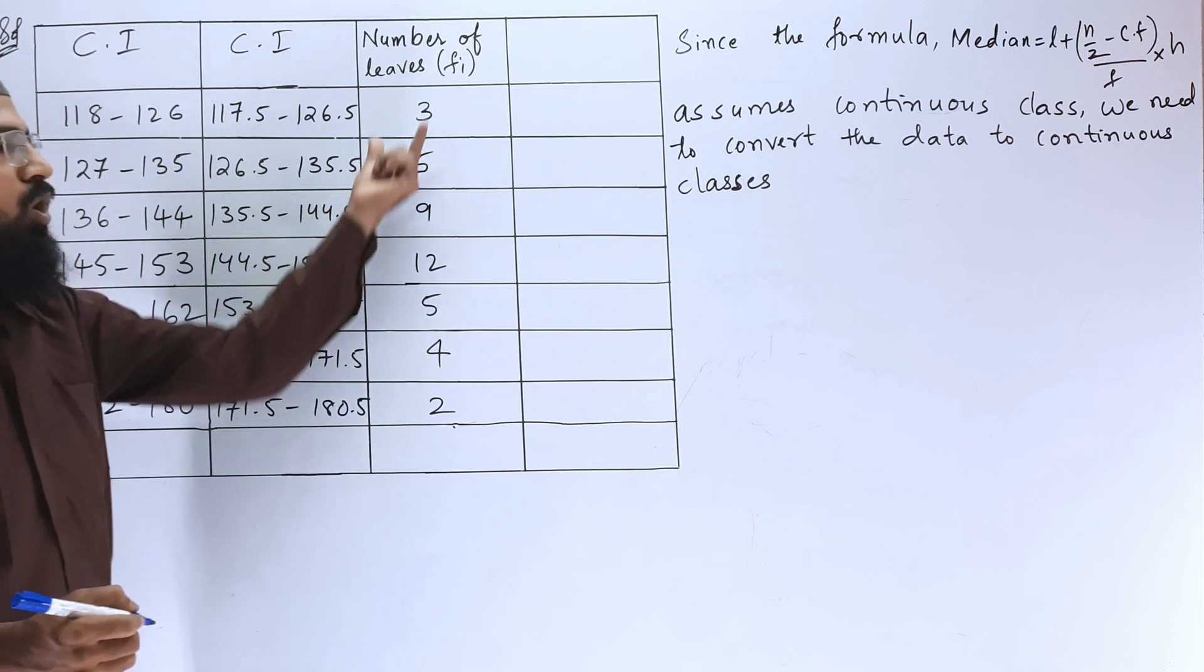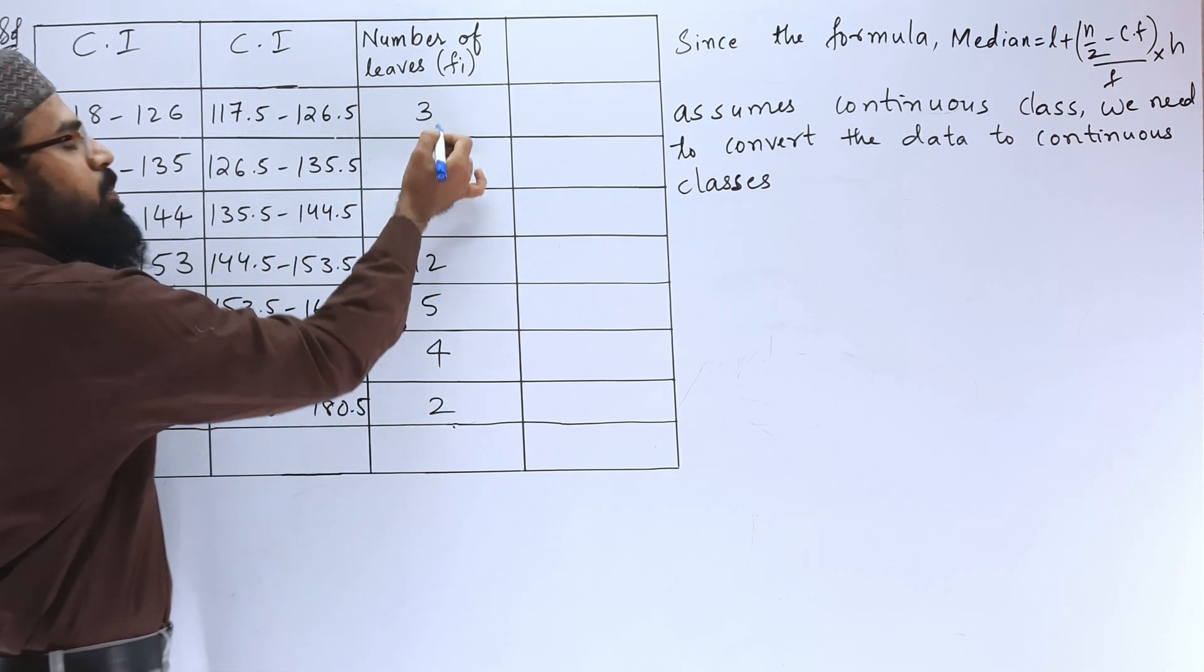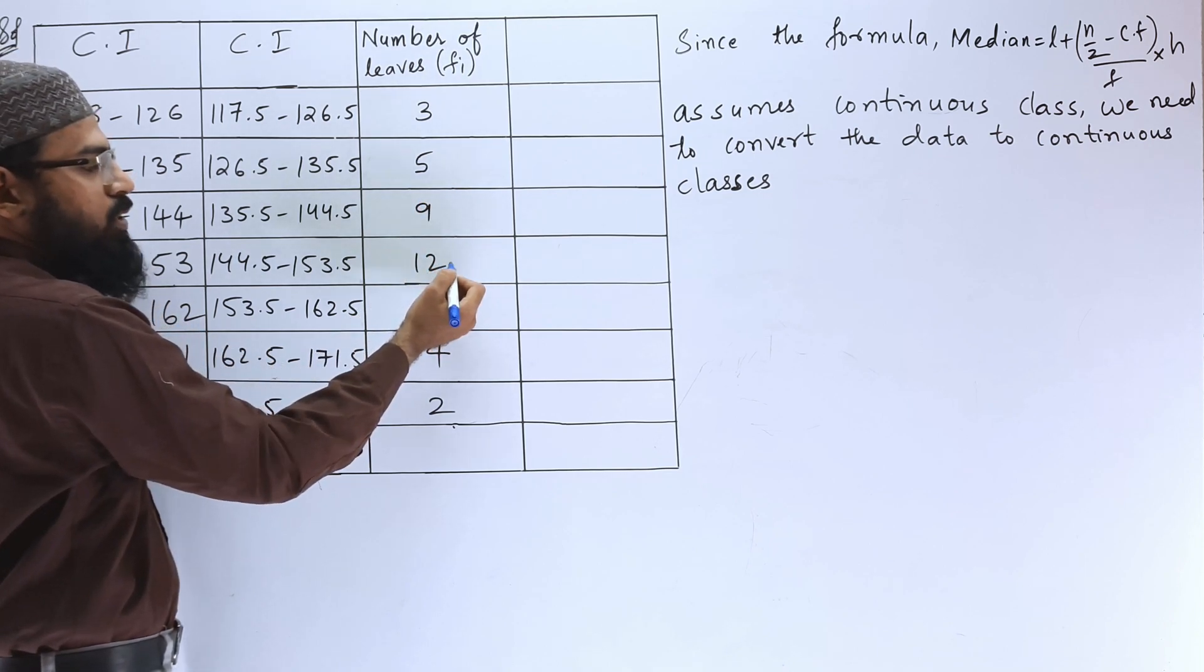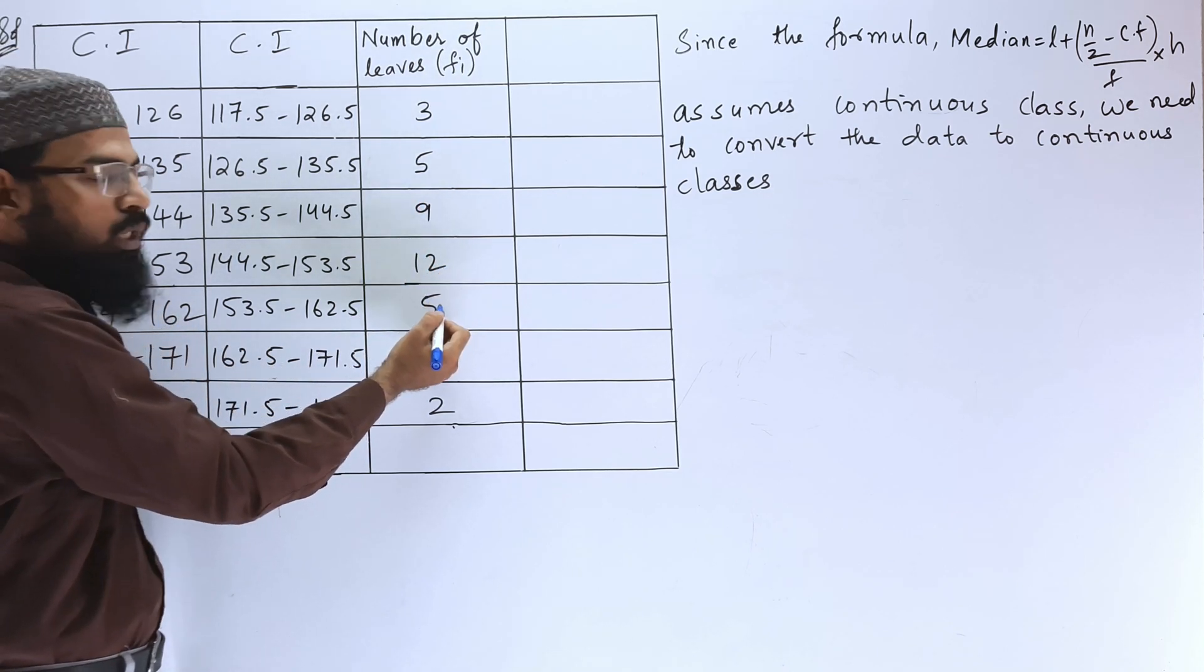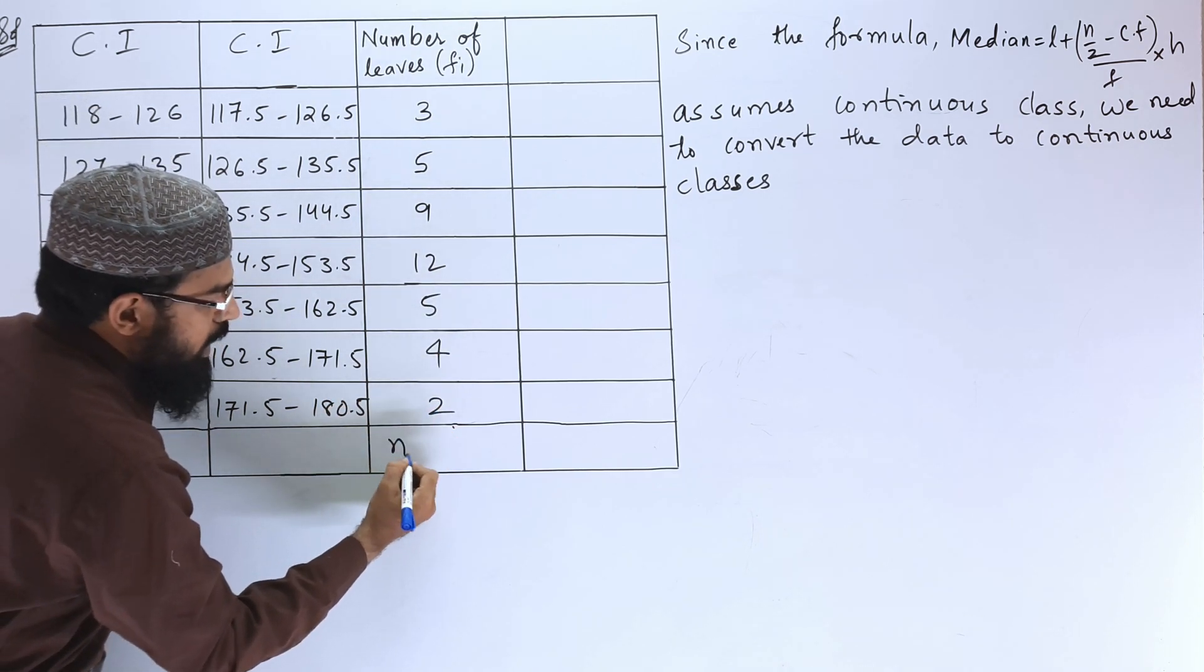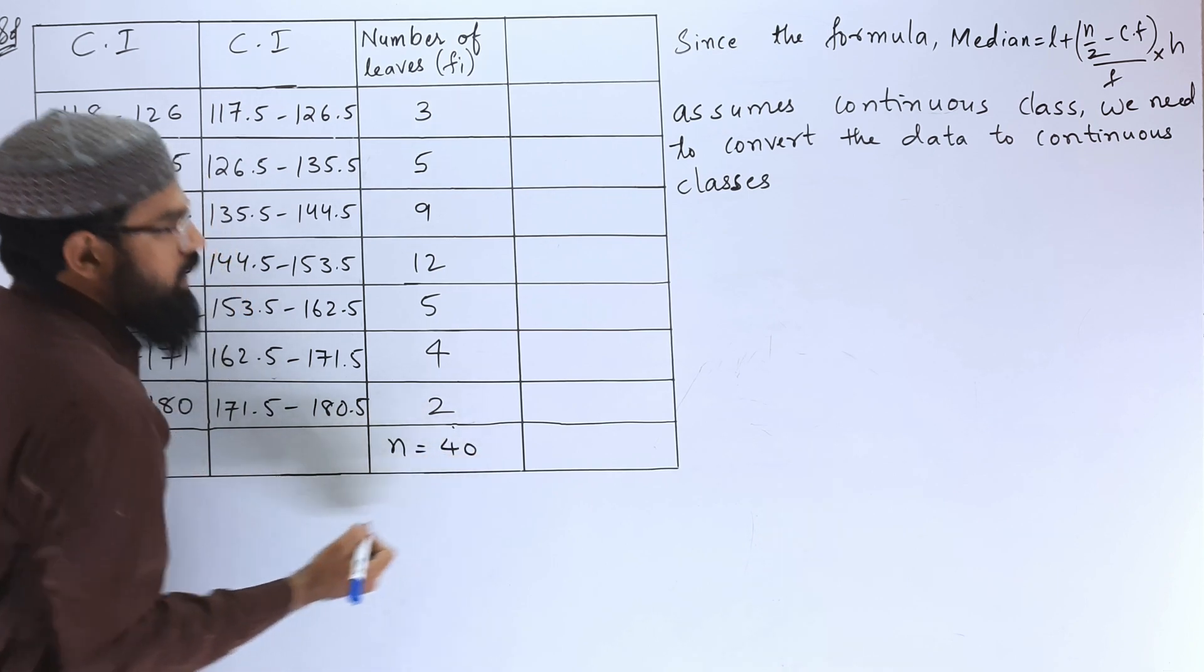Next we have to add all these frequencies. 3 plus 5 is 8, 8 plus 9 is 17, 17 plus 12 is 29, 29 plus 5 is 34, 34 plus 4 is 38, 38 plus 2 is 40. So N is equals to 40.